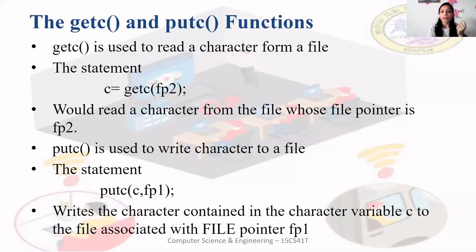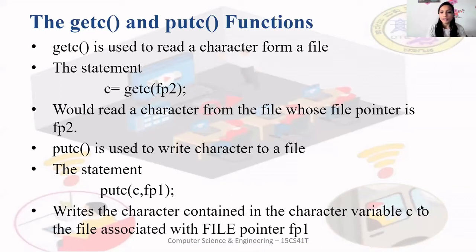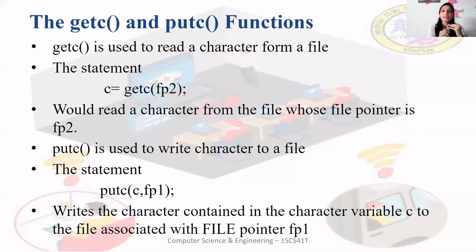To write a single character to a file, we use putc. putc takes two parameters: c (the character you want to write) and the file pointer. This writes the character contained in variable c to the file associated with the file pointer. Remember: getc reads a single character from a file; putc writes a single character to a file — not to the console, but to the file opened by the file pointer.